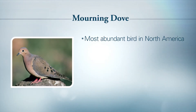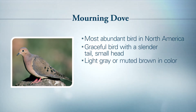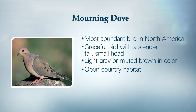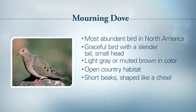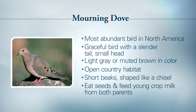The mourning dove is the most abundant bird in North America. It has been described as a graceful bird with a slender tail and small head, usually light gray or muted brown in color. Their habitat is open country with scattered trees and woodland edges. Their beaks are short and shaped like a chisel. They eat almost exclusively seeds, but they feed their young crop milk. You will find doves on the ground using their beaks to peck and push, trying to find seeds.